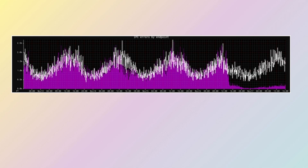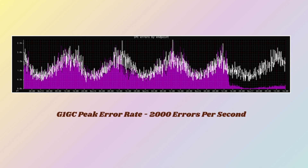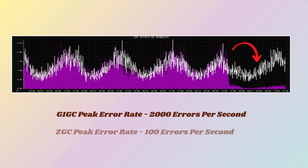In the figure shown, you can see that the peak error rate with G1GC, as shown in white spikes, was 2000 errors per second. However, with ZGC enabled on November 16th, it dropped to almost 100 errors per second, as shown in purple spikes.